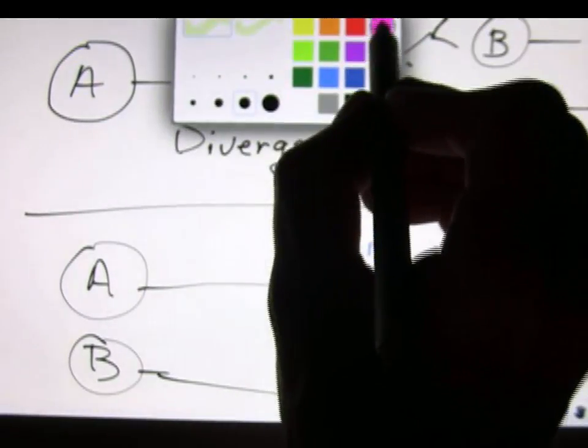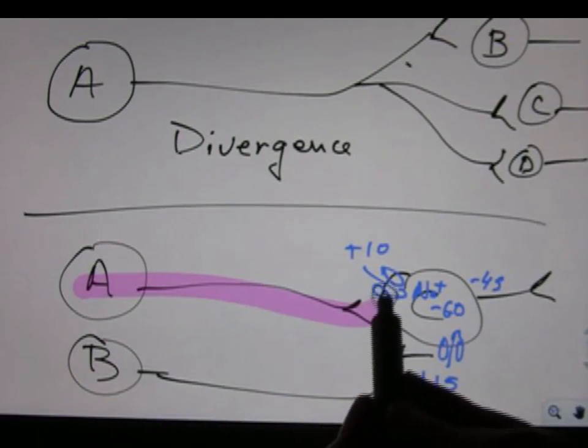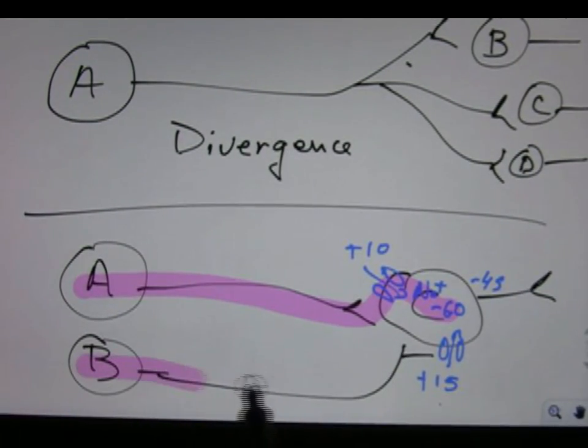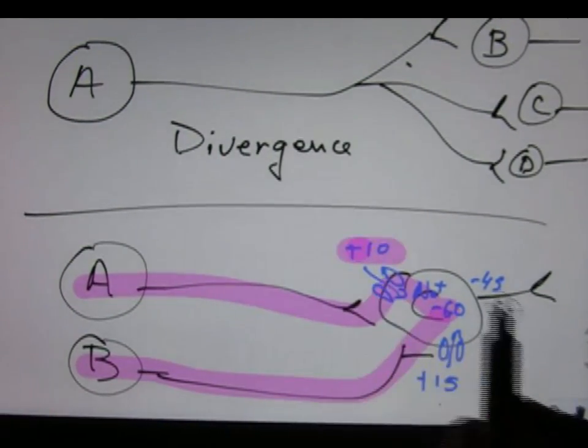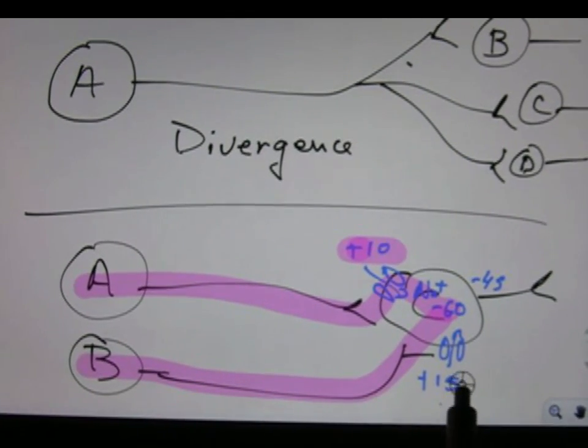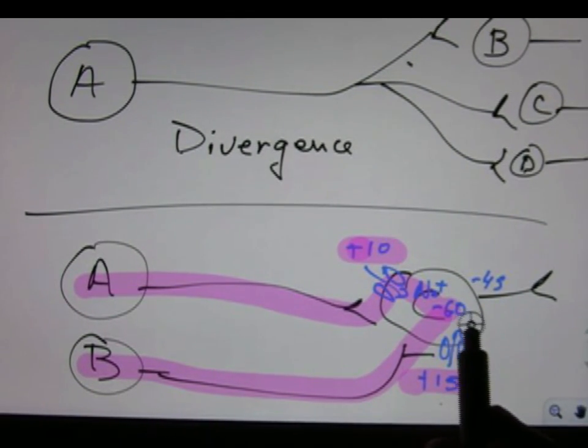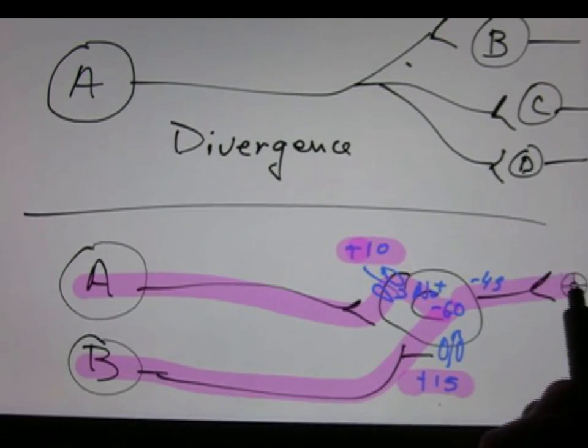So in this case, the combination of inputs from A and the inputs from B, this plus 10 getting you to minus 60, and at the same time plus 15 getting you to minus 45, gets a new action potential.